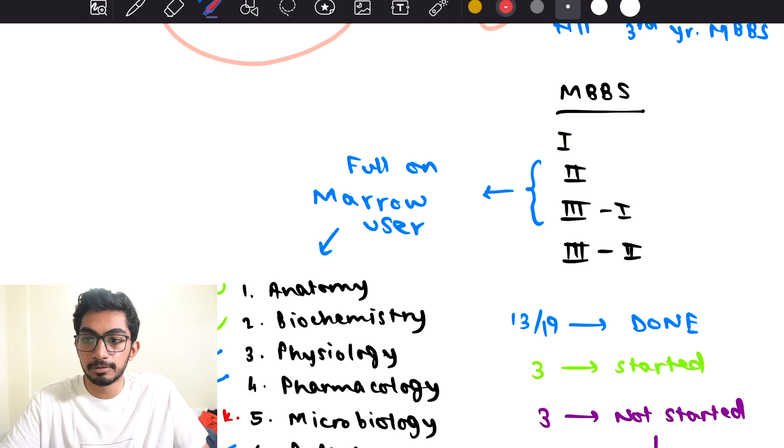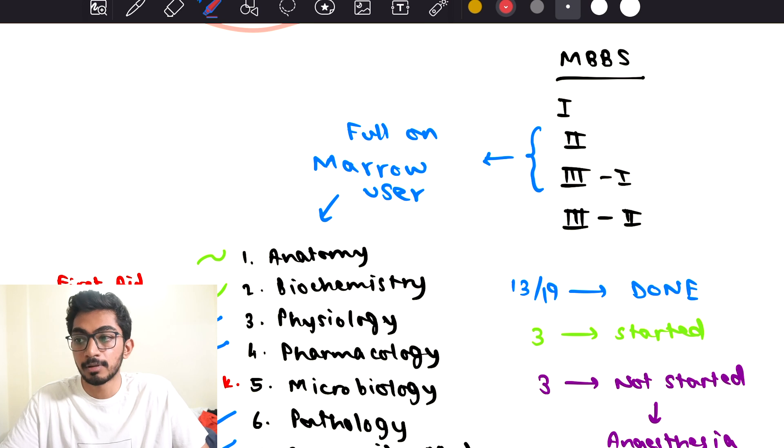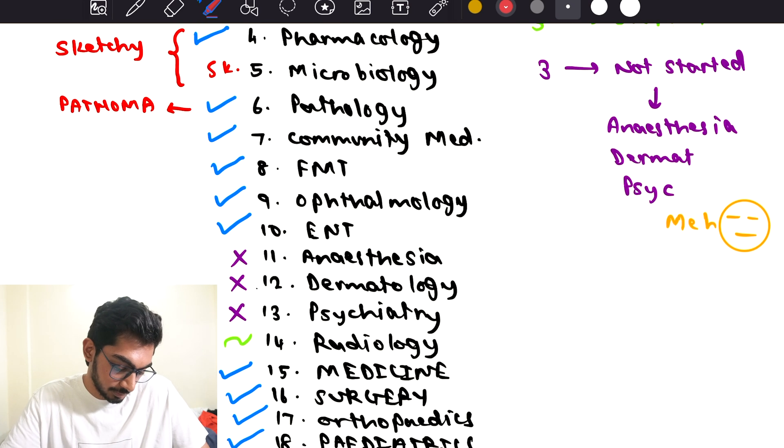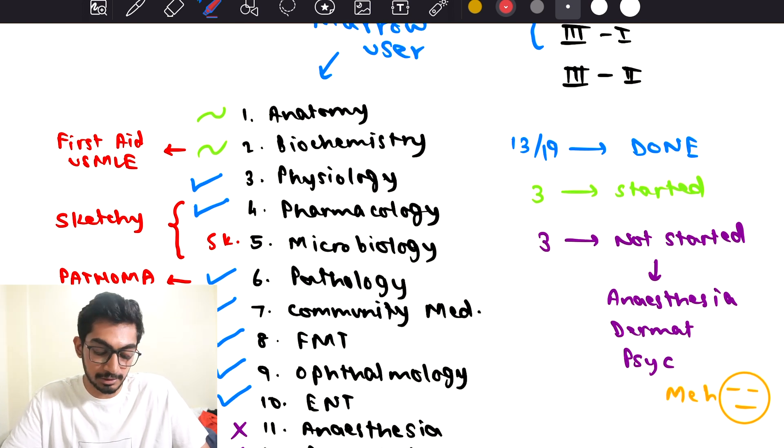I began using Marrow in my second year as the main resource for NEET PG, and I used it all throughout second and third years. Even in the COVID lockdown, I managed to finish these subjects right here. From all of the 19 subjects, I had finished 13 subjects. I wish I could show you my Marrow account, but I remember that I had studied and finished 13 of the 19 total subjects of NEET PG and the MBBS syllabus before I entered my final year of MBBS.